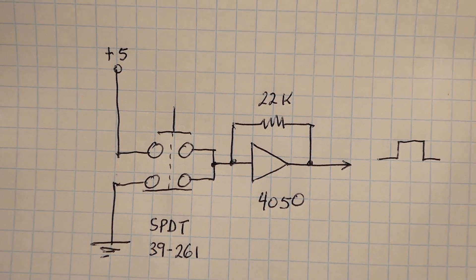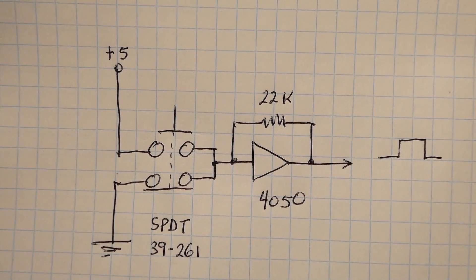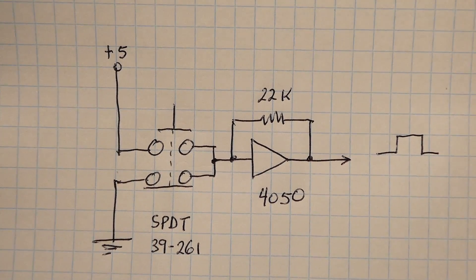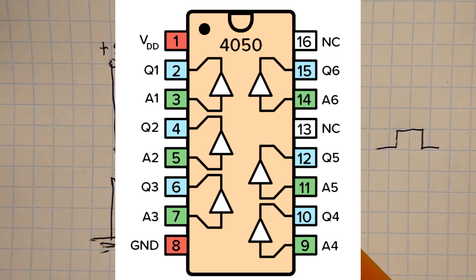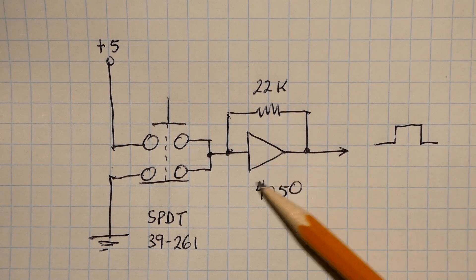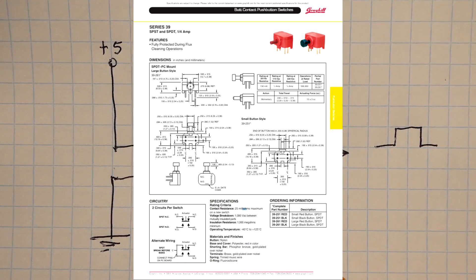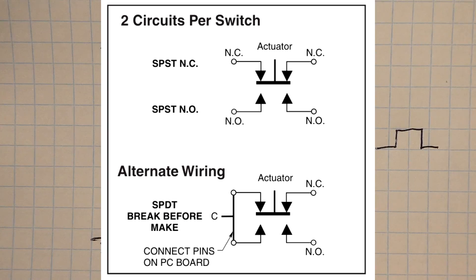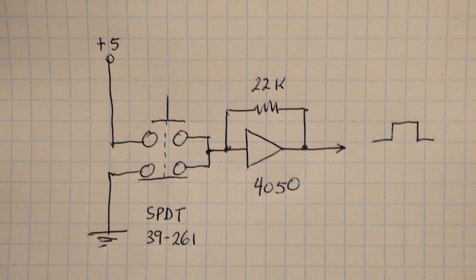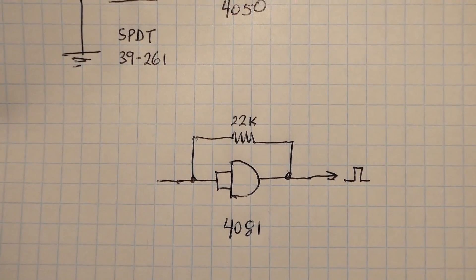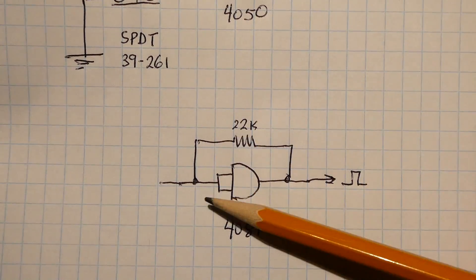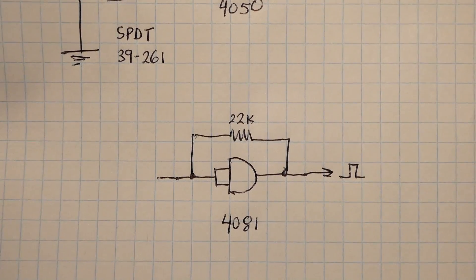This final circuit is probably the simplest debounce circuit you'll ever find. It's a 4050 non-inverting buffer with a resistor from the output back to the input, which forms an RS flip-flop, driven by a single-pole double-throw switch made by Greyhill, part number 39-261. If you don't have a 4050 chip, you could use a 4081 AND gate with both inputs tied together and a resistor from output to input — that will also work as an RS flip-flop.